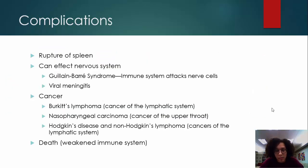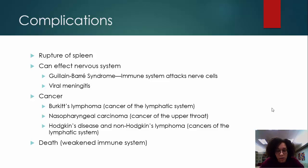Some complications associated with mononucleosis include rupture of the spleen, because it becomes so enlarged that it can become ruptured through injury or even strenuous activity.